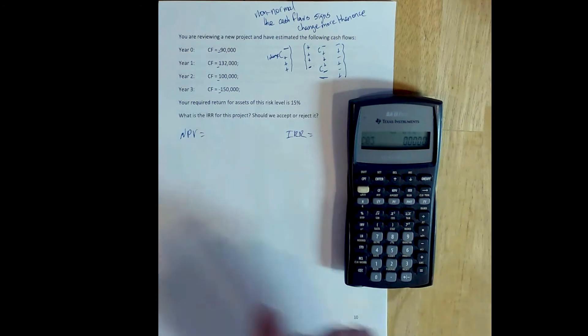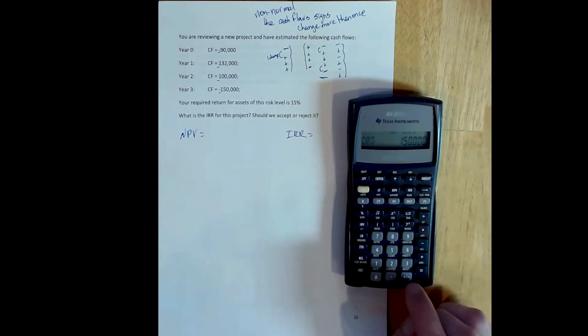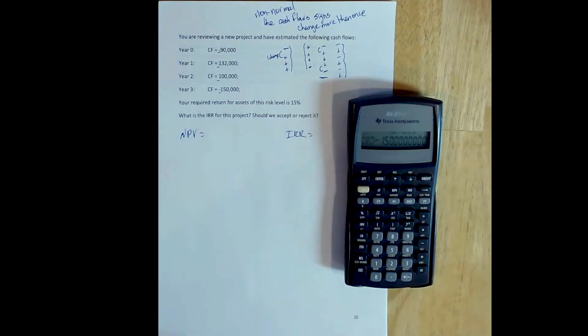The third cash flow is $150,000. But in this case, we have another cost. So our final cash flow is negative $150,000. And then, once we've entered in all the cash flows, we can stop.